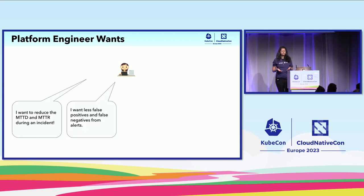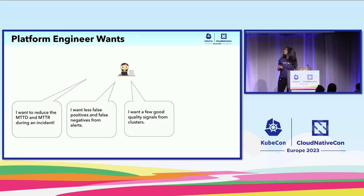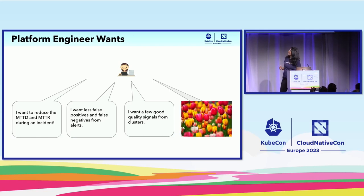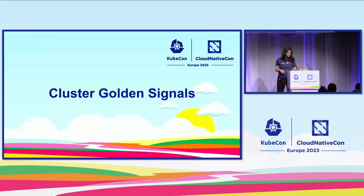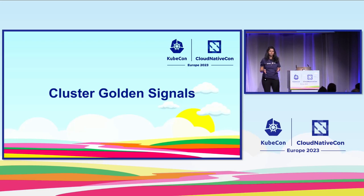They want fewer false positives and fewer false negatives — when they get an alert, they want to be alerted only when there is a real problem. They also want a few good quality signals, signal filtered from noise. That's the motivation behind exploring cluster golden signals.